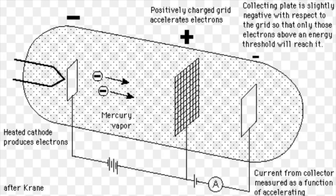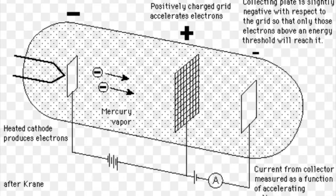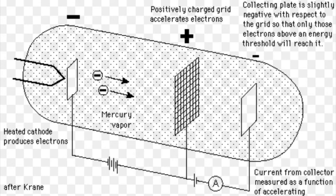They proved this by using a vacuum tube that had electrons accelerated by a voltage toward a positively charged grid while in mercury vapor. Past the grid was a collection plate that was held at a small negative voltage.